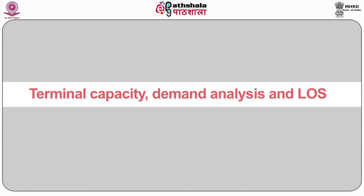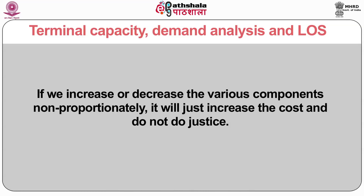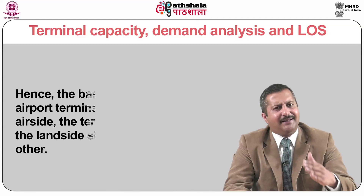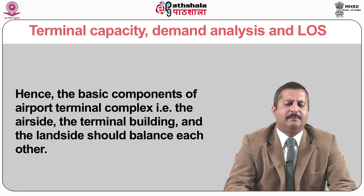I will discuss about terminal capacity, demand analysis and LOS. Once the terminal project aspects have been understood, the terminal planner and operator needs to see that all the elements or components of the project are properly balanced and whether they complement each other. If we increase or decrease the various components non-proportionately, it will just increase the cost and do not do justice with the structure. Hence, the basic components of the airport terminal complex — the air side, the terminal building and land side — should balance each other. While designing them, various aspects such as seasonal variations in air traffic and passenger flows both during peak and non-peak hours, routine and non-routine operations, and present and future needs are to be kept into consideration.